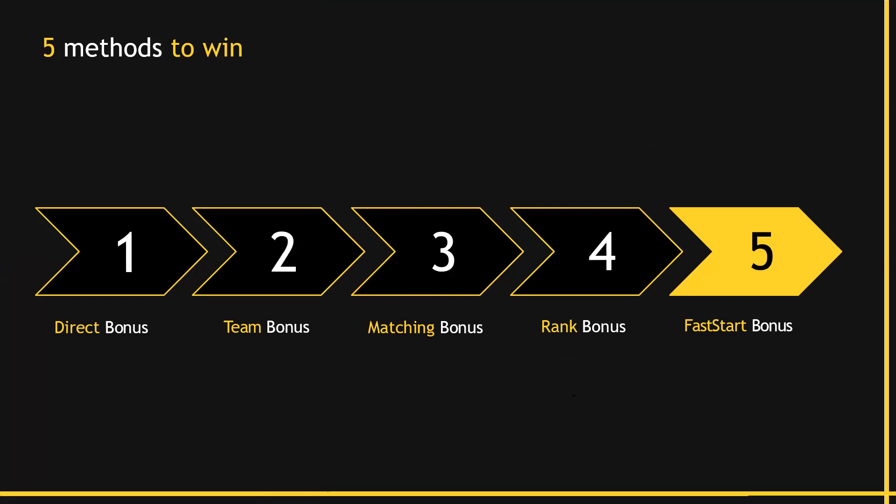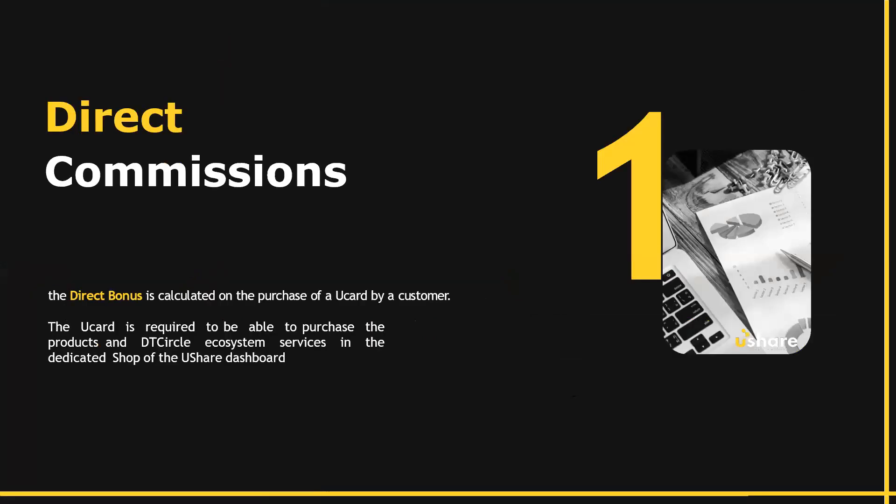Now let's talk about the five methods to earn. The first one is the direct bonus. The second one is the team bonus. The third one is the matching bonus. Then you have the rank bonus and the fast start bonus.